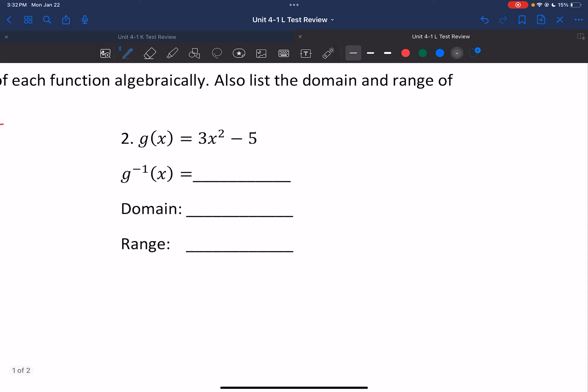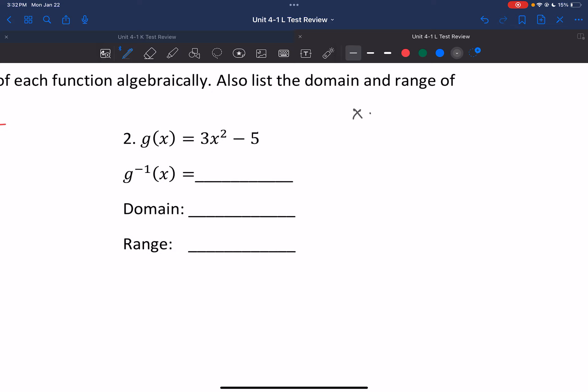Now let's inverse this thing. Again, start by swapping x and y. Start with dealing with any addition or subtraction. So we have x plus 5 equals 3y squared. Then a division or multiplication. So I have 1/3 x plus 5/3 equals y squared. And then we would deal with any exponents or square roots. So we have square root of 1/3 x plus 5/3 equals y.